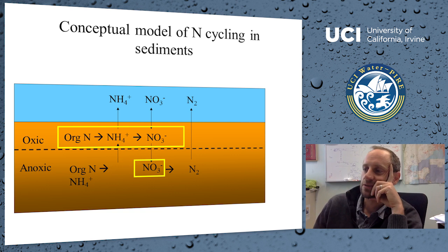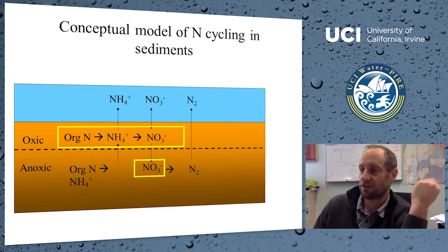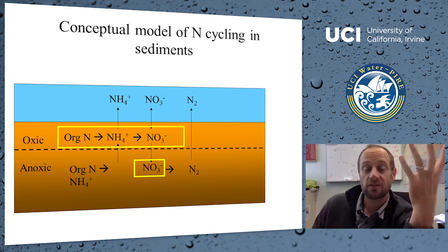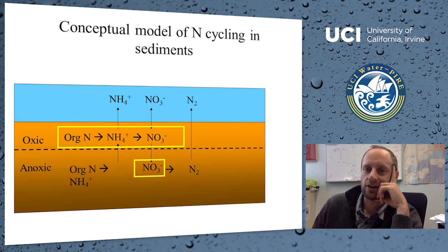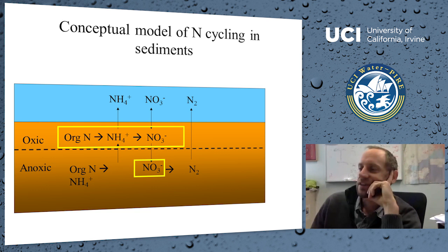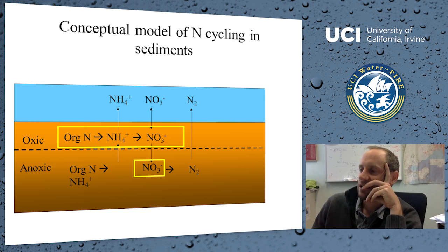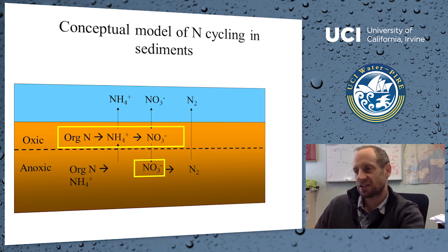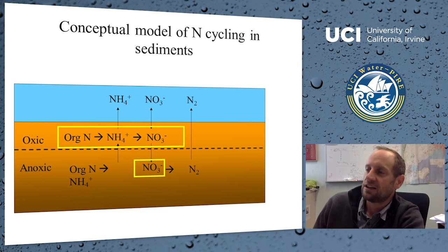As we put more nitrogen into those systems, we turn them greener and greener — both phytoplankton in the water column and macroalgae like sea lettuce, which you see around coastal areas with high nitrogen inputs. The next step in the nitrogen cycle is conversion of ammonium to nitrate, called nitrification, which only occurs in the oxic zone and requires oxygen.